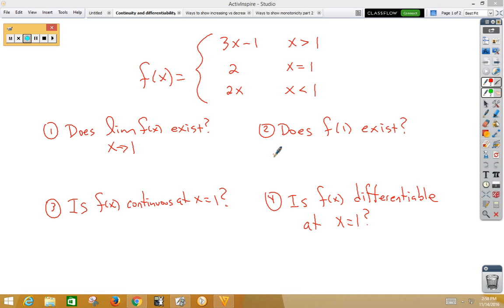Our first question is, does the limit exist as x approaches 1? Notice that when we say x approaches 1, that is a two-sided limit. So we have to compare the left side limit with the right side limit. The limit as x approaches 1 from the right side uses 3x minus 1, and if we plug in, we get 3 minus 1 is 2.